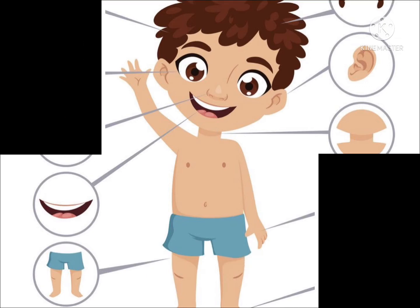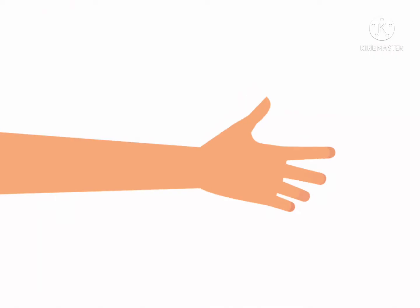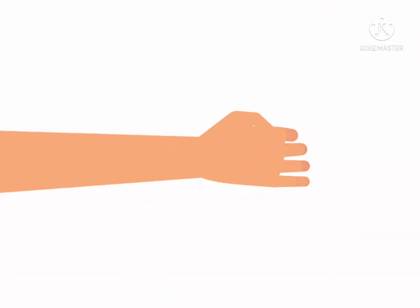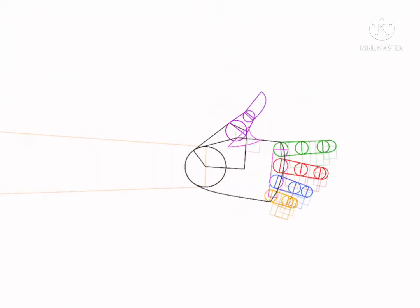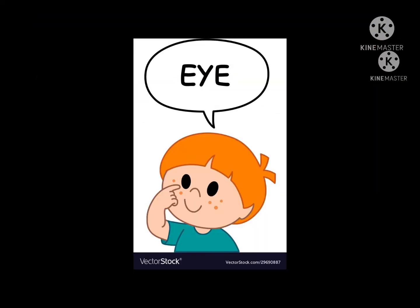Let's start! Hand, we call it haat. Finger, umgli. Knee, guthne. Eye, we call it ankh.